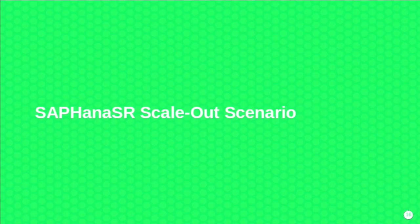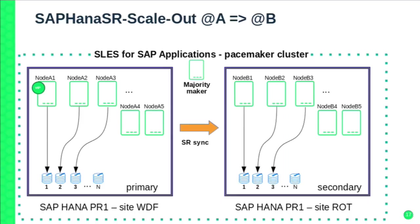Our newest thing, now in SLES 12 SP2, is the scale-out scenario. What we've seen before is only scale-up — more memory for the database. But there are datasets that may be more than fits in a single server. In the business intelligence area, you normally do a scale-out approach with HANA, having multiple HANA nodes. You also want to replicate that to a second data center or second set of nodes to be highly available. We support that too, though it makes things more complex, and we only support the performance-optimized scenario for scale-out. Fabian will take you through more details.